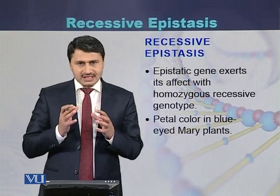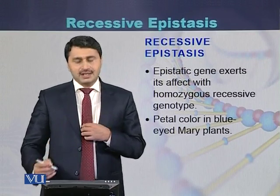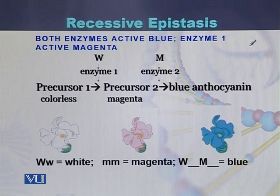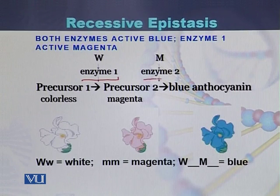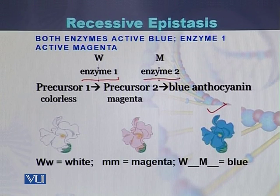An example of recessive epistasis is the petal color in a plant called the blue-eyed Mary plant. In this plant, there are two different enzymes that have a role in the production of color. Enzyme 1 is produced by the gene named W, and enzyme 2 by another gene. If both enzymes are active, the color of the flower will be blue, as precursor 1 is converted into precursor 2, which is ultimately converted into blue anthocyanin.